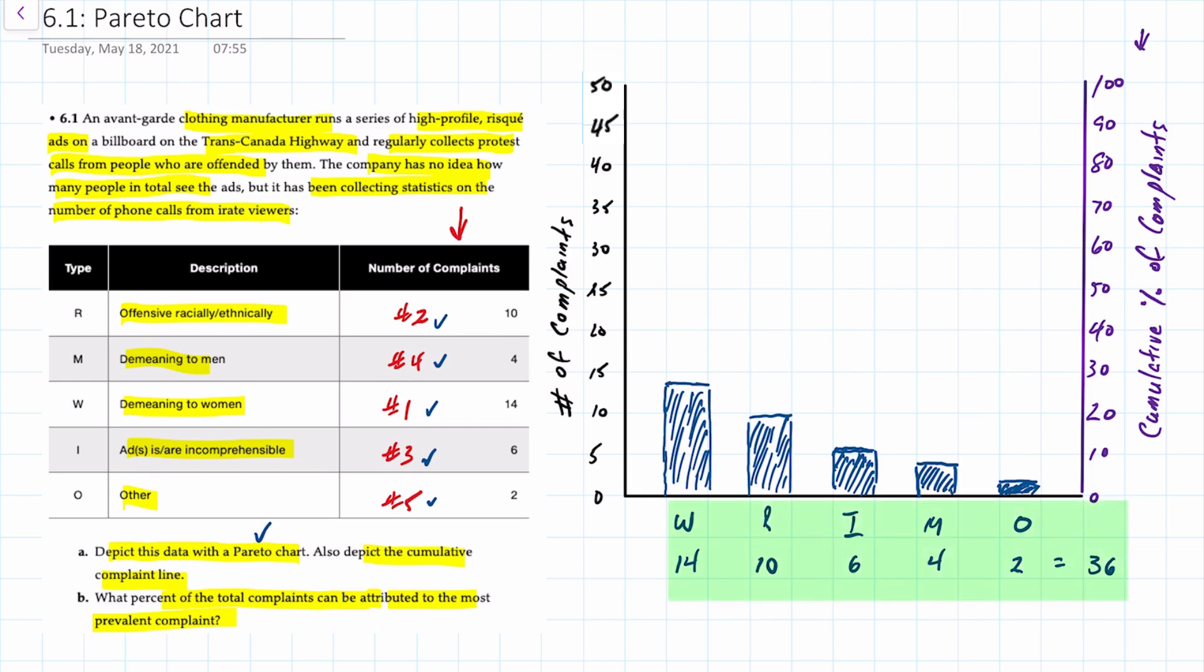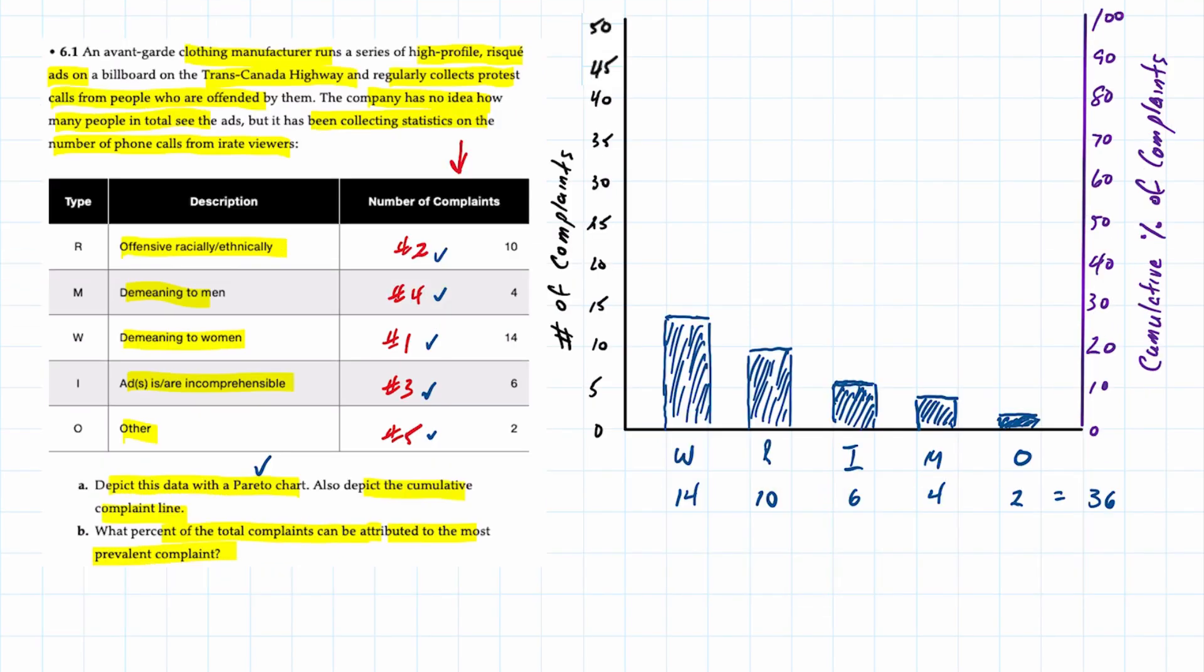By adding up the total number of complaints to be 36 we then calculate the cumulative percentage of each starting with the first ranked. So 14 divided by 36 is about 39 percent. So if we look at the purple axis, 39 percent would be about here.